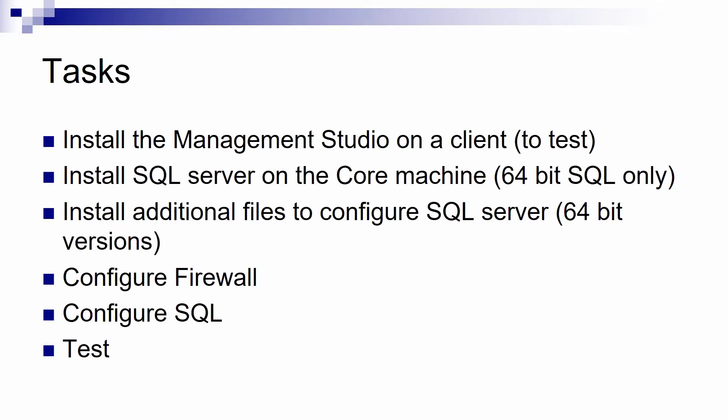The tasks in this video are: first, install SQL Server Management Studio on a client machine to make a test, then start installing SQL Server on the Server Core machine. Note that on Server Core you can only install 64-bit versions of SQL. After SQL is installed, we also have to install some additional files like a PowerShell module, some SQL tools, and so on — also 64-bit. We need to configure the firewall, make some SQL configurations, and at the end test that we can connect from the client to the server.